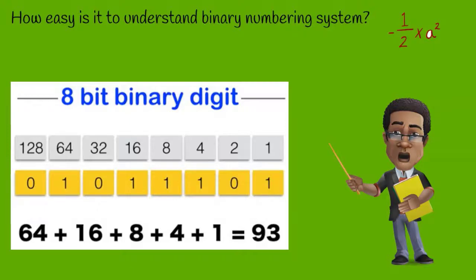The fifth bit is on so that's a one. The sixth bit is off so that has a zero. The seventh bit is on so that is a one. The eighth and final bit is off so that shows a zero. Now if you add up all of the bits that are on: 64 plus 16 plus 8 plus 4 plus 1 equals the number 93. With this numbering system, you can have any number from zero to 255.